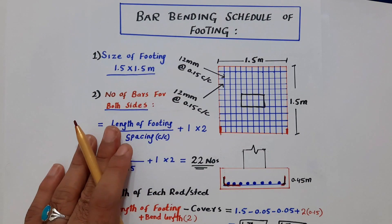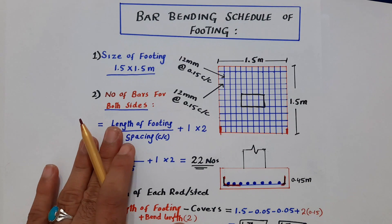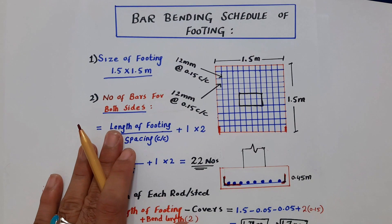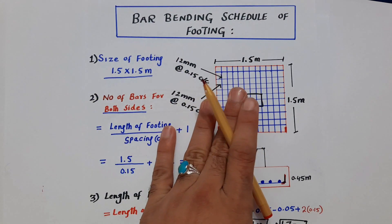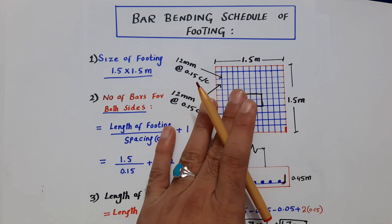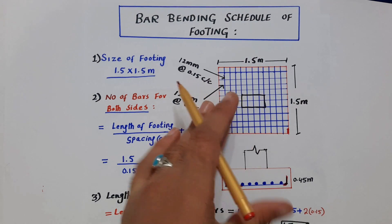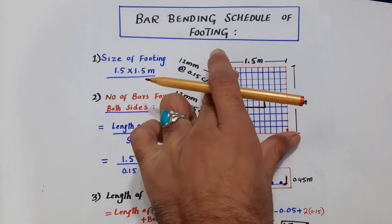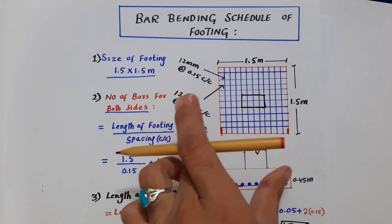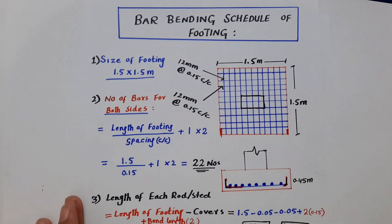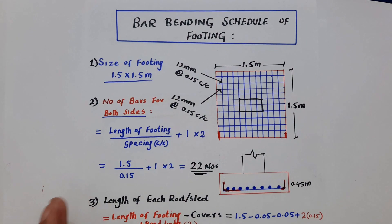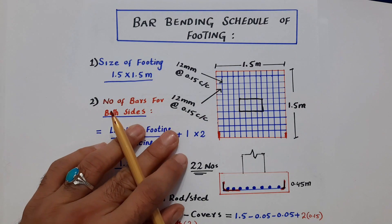This is the bar bending schedule and steel reinforcement calculation for RCC footing. By the same method, you can calculate the quantity of steel for any kind of footing. If the length changes, the formula remains the same. Thanks for watching — see you in the next video, goodbye.